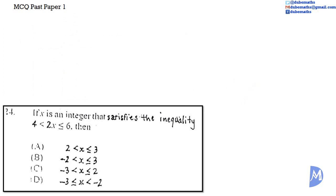Question 24. If x is an integer that satisfies the inequality 4 is less than 2x, which is less than or equal to 6, then is it A: 2 is less than x, which is less than or equal to 3?